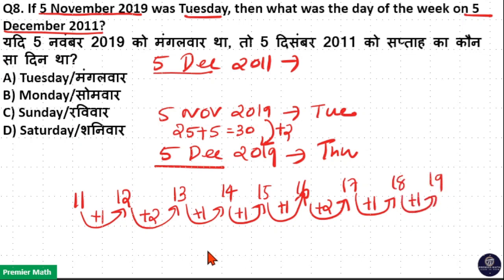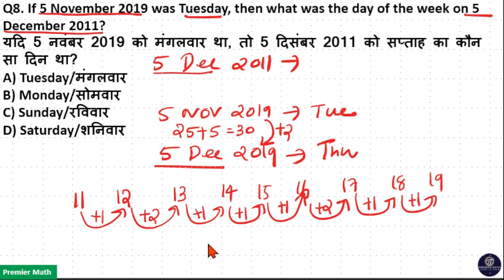So total: 1 plus 2 is 3, plus 1 is 4, plus 1 is 5, plus 1 is 6, plus 2 is 8, plus 1 is 9, plus 1 is 10 odd days. Total 10 odd days means 10 divided by 7 gives a remainder of 3. So there are 3 odd days between 2011 and 2019.